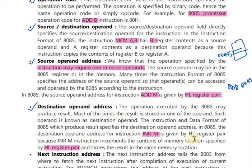There is a need of another operand which resides in HL register pair. Next is destination operand address. Look at this instruction: INR M, increment M, that is memory location.